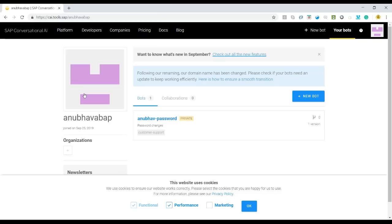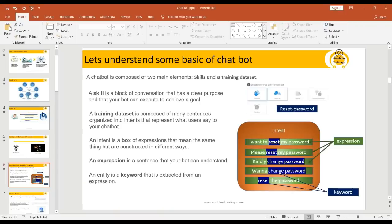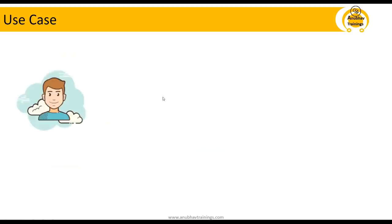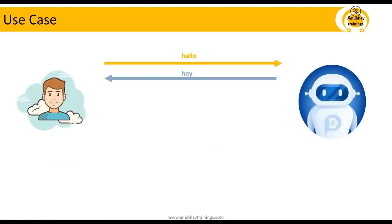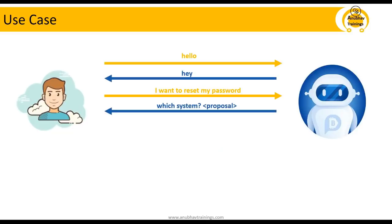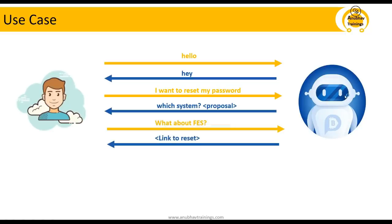Once logged in, you can find the list of bots currently created. Right now I have created only one for practice, but I will show you creating a bot from scratch. Our use case: Mr. Sam, who is a SAP user, would like to reset his SAP logon and password. There are different systems in the company, and we want Mr. Sam to get support from our robot. This bot will greet Mr. Sam when he connects to the system, handle his password reset request, provide a list of available systems, and once he chooses a system, send him the link to reset his password.